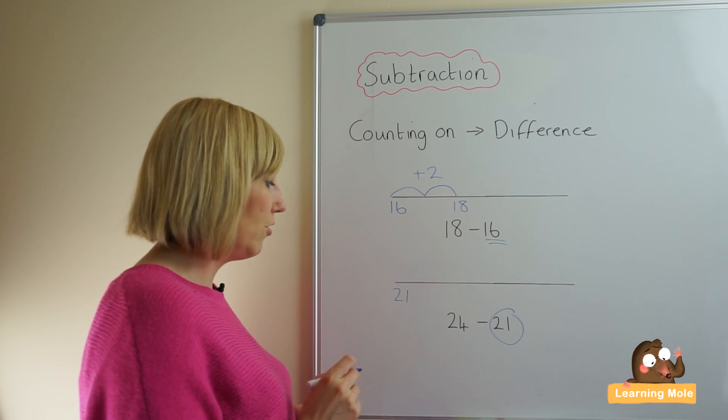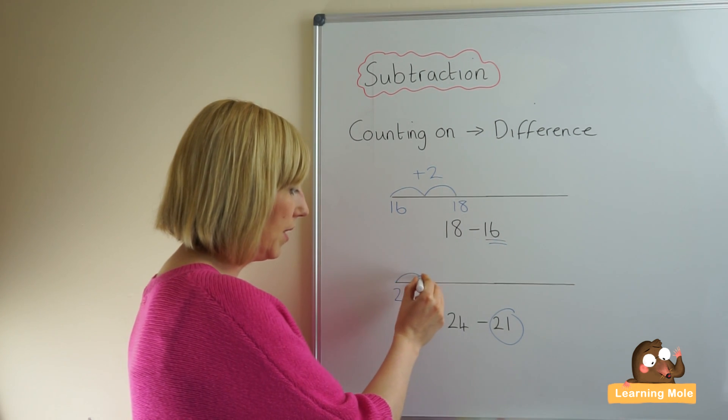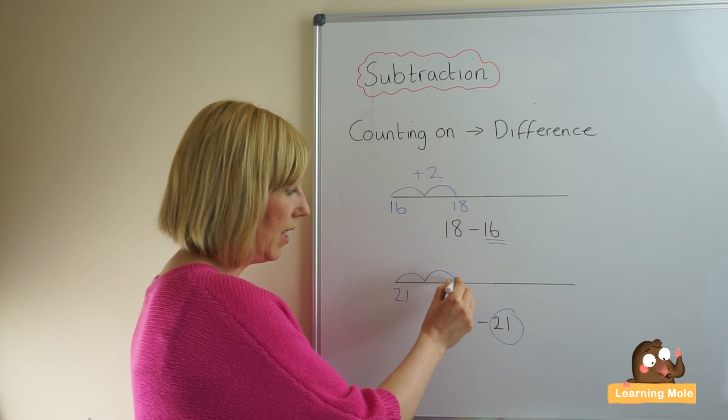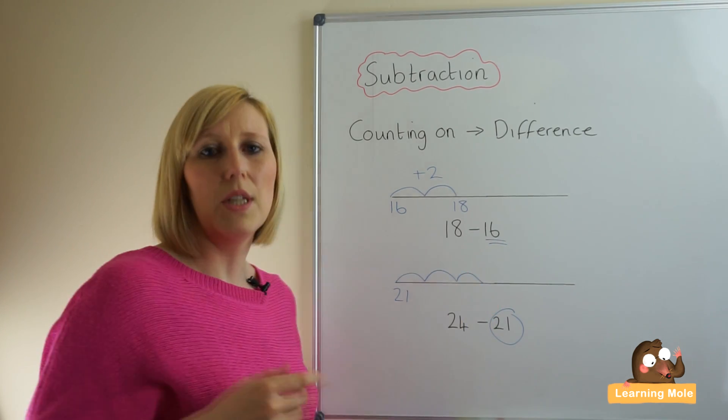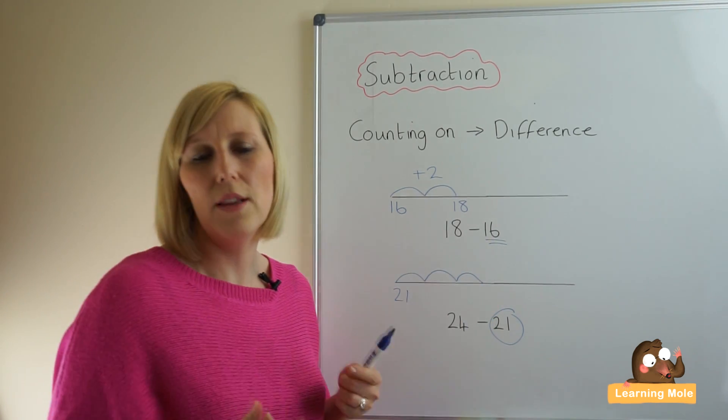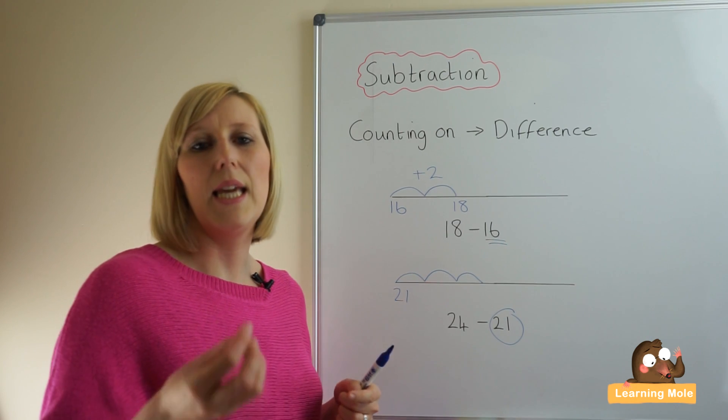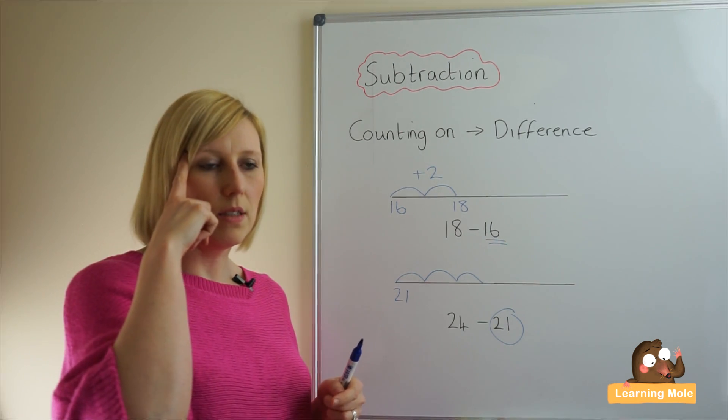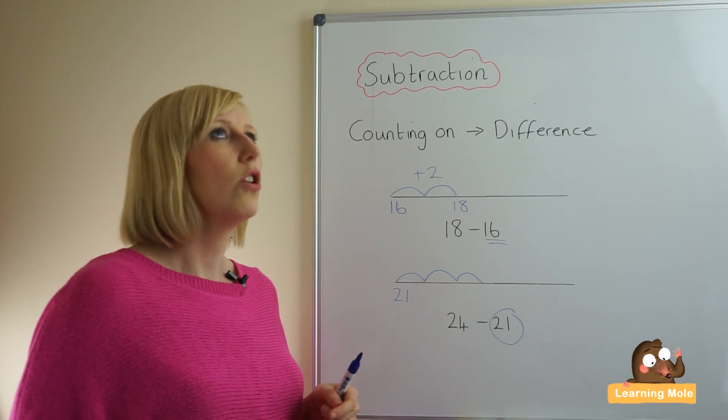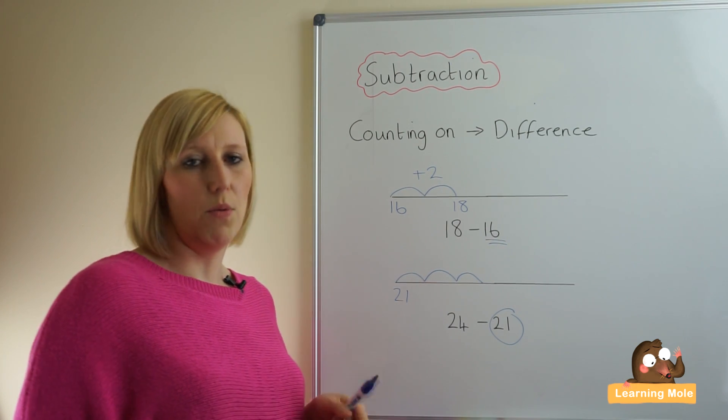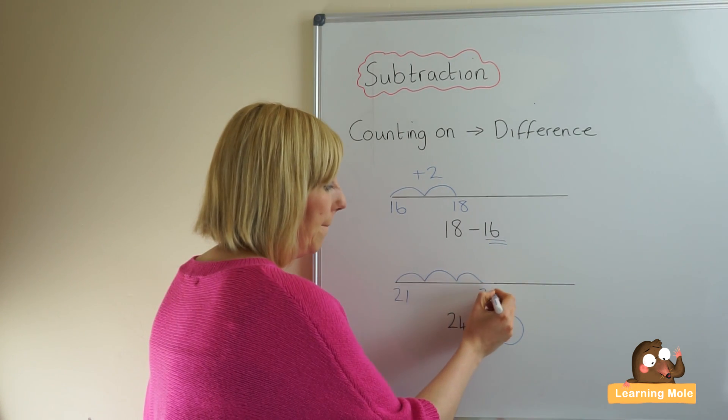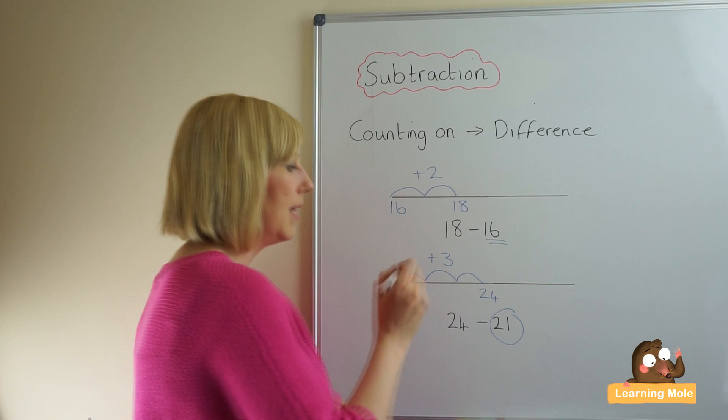21, 22, 23, 24. And you'll be wanting your child again to be going through this process mentally in their head: 21, 22, 23, 24. And of course we can see that is three jumps. And just double checking: 24, 23, 22, 21.